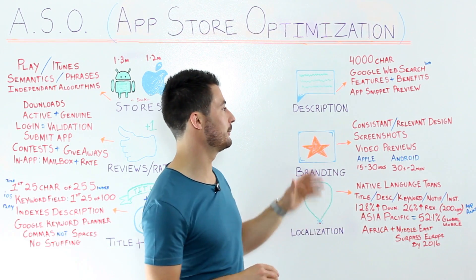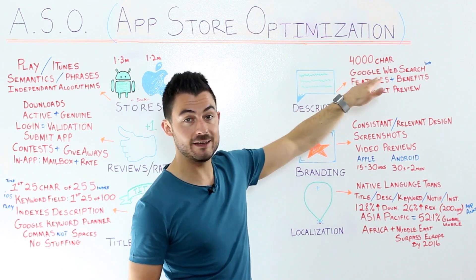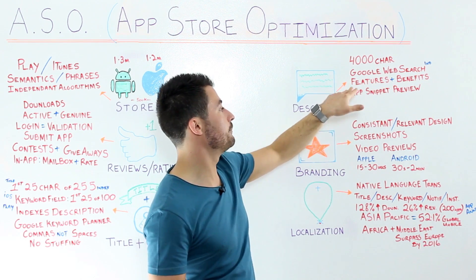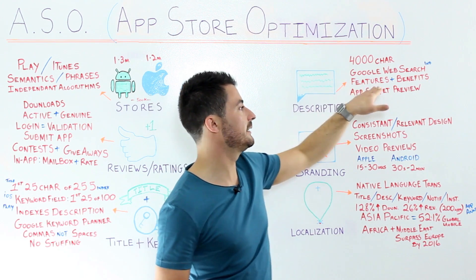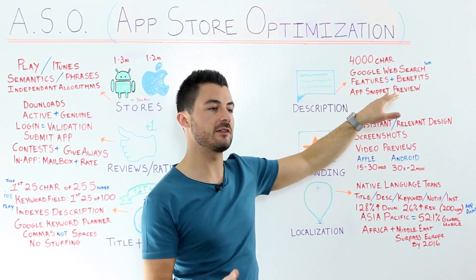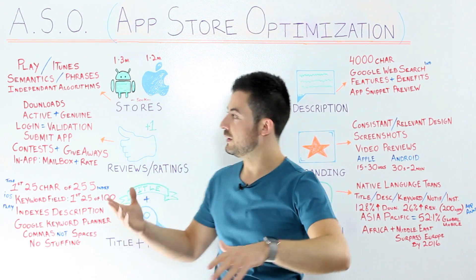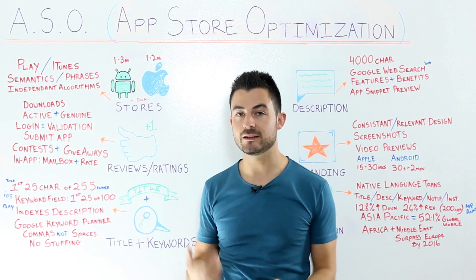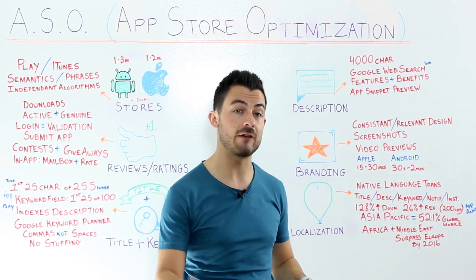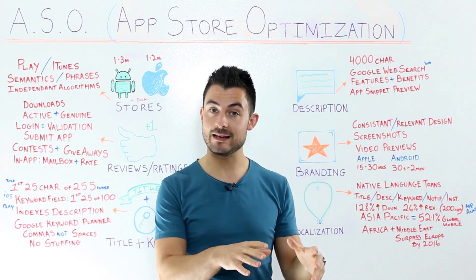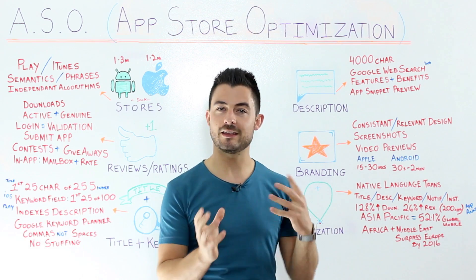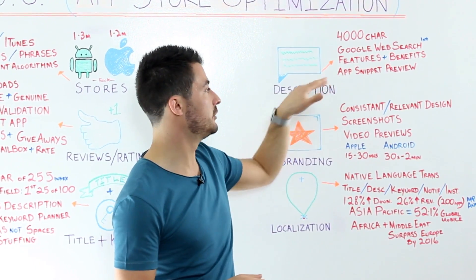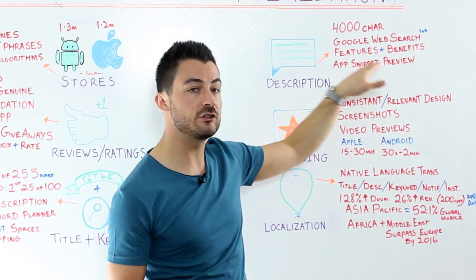You get around 4,000 characters for the description on both iOS and Android. Google Play uses very similar technology to Google Search in its ranking algorithms. Remember there are two aspects to ASO: influencing the algorithms through downloads, active use, and positive reviews, and then converting users once they land on your app's page. In the description, don't keyword-stuff — educate users on the features, benefits, and unique value proposition of your app.